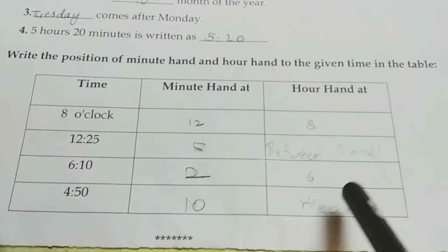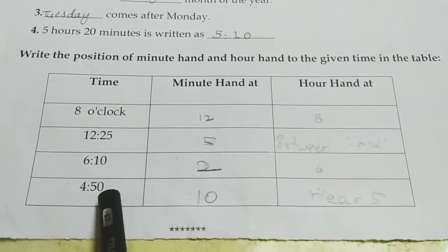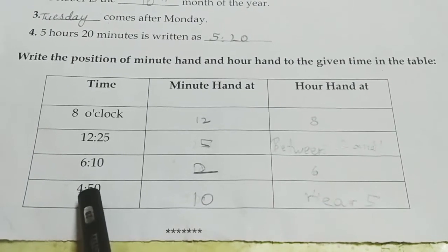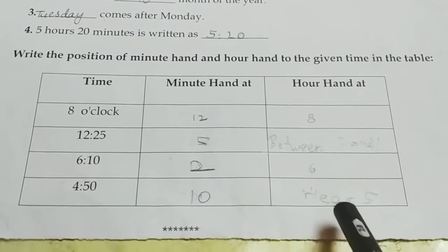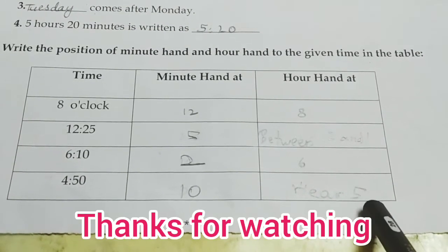4.50. 4.50 means 50 minutes means the minute hand should show 10. And the hour hand nearer to 5. Nearer to 5.